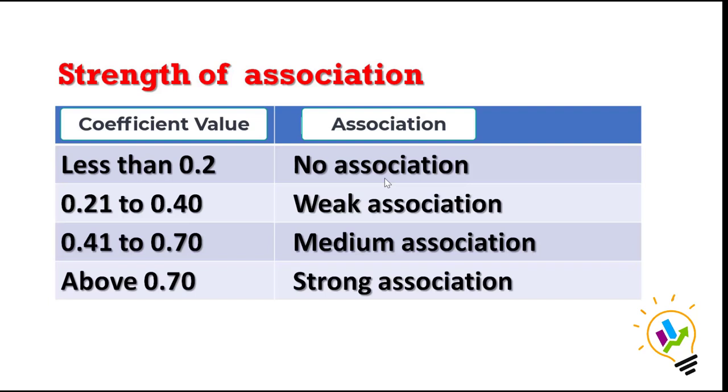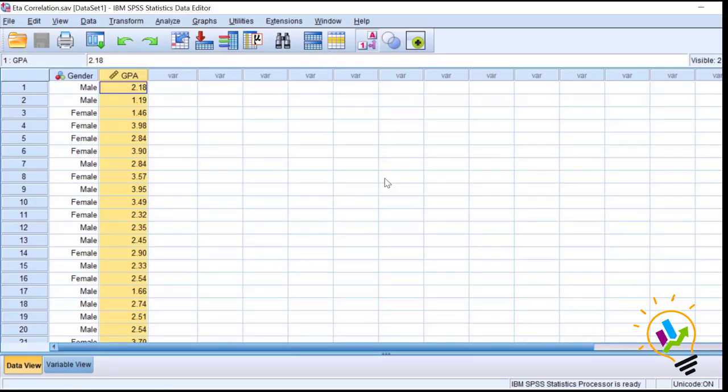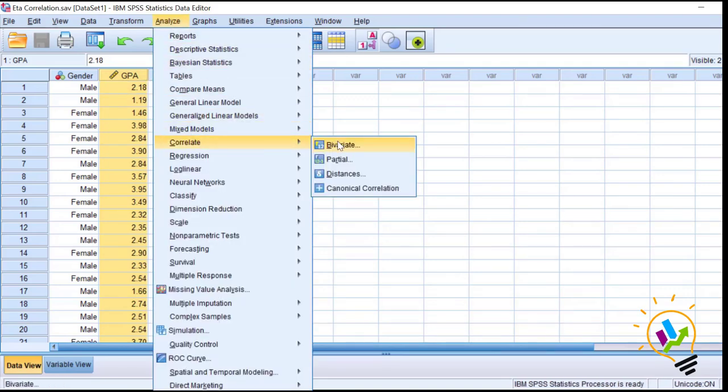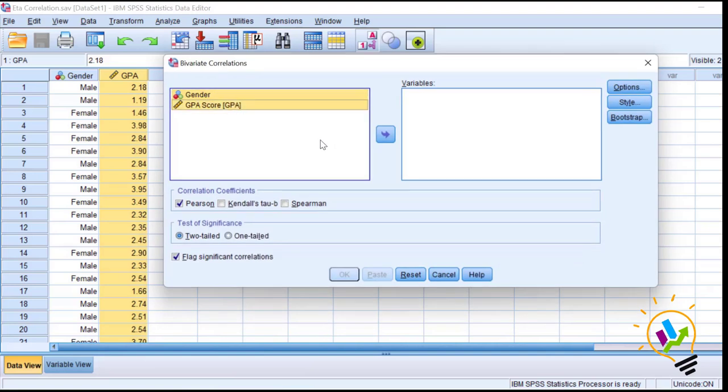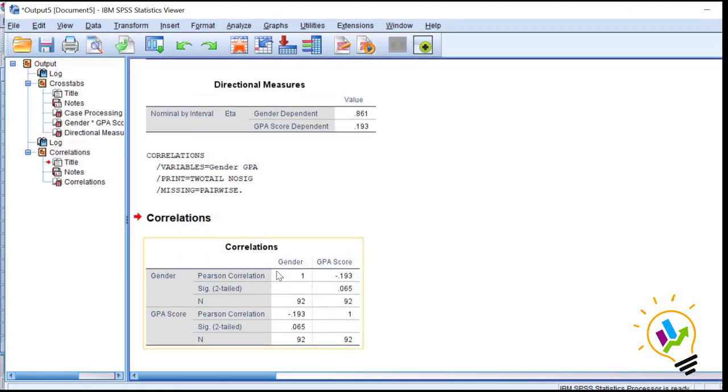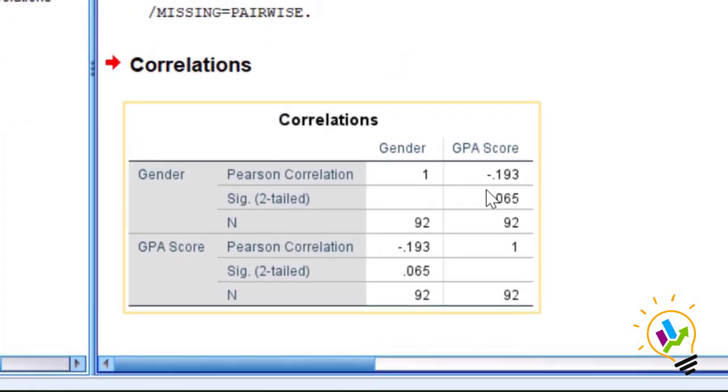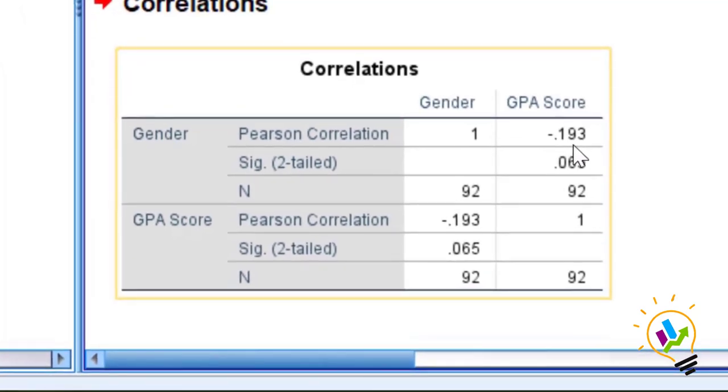Now how to find the significant value? For significant value, you must do correlation analysis. Analyze, Correlation, Bivariate. Select the two variables and click OK. In this correlation you can see gender to GPA is minus 0.193. We already got in eta correlation the association is 0.193. Here we are going to only see the significant value. The significant value is 0.065.